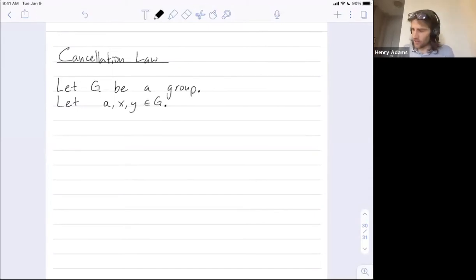Now the cancellation law says the following. If a times x is equal to a times y, then the conclusion that you could draw is that x is equal to y.